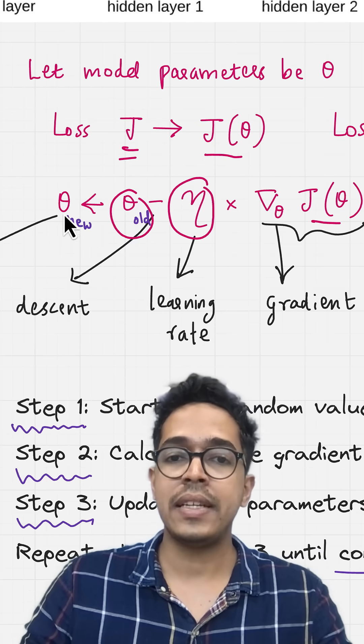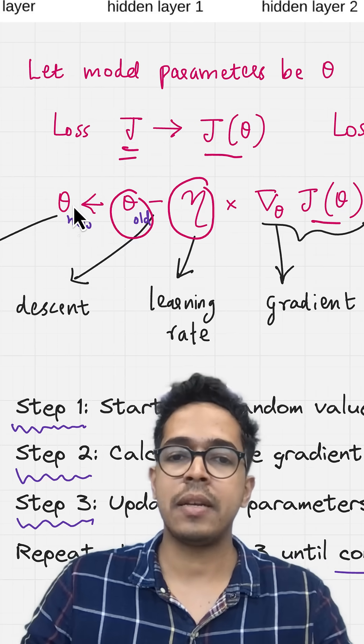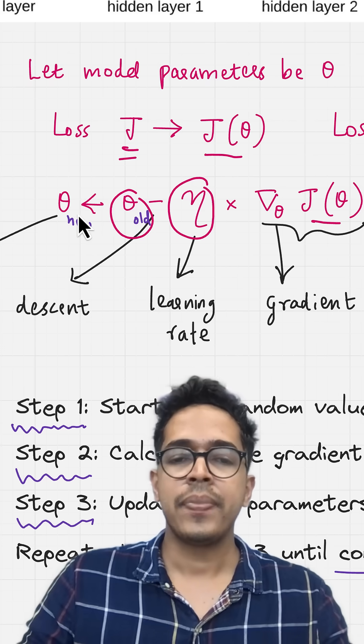You have to change the values of theta, which collectively represents weights and biases, in a certain way. How do you do this?